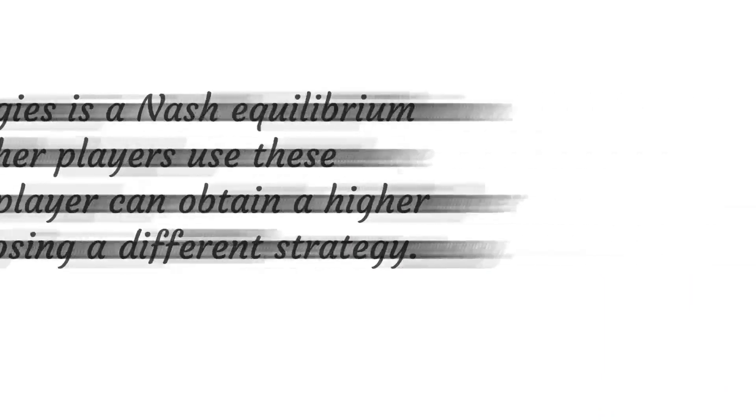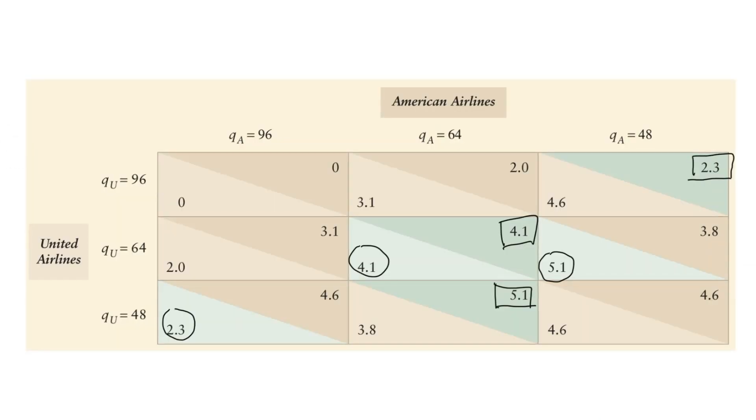If a game has a dominant strategy solution, then that solution must be a Nash equilibrium. However, many games that do not have dominant strategy solutions have a Nash equilibrium. For example, in this game, neither American nor United has a single dominant strategy, but we can find a Nash equilibrium by using a two-step procedure.